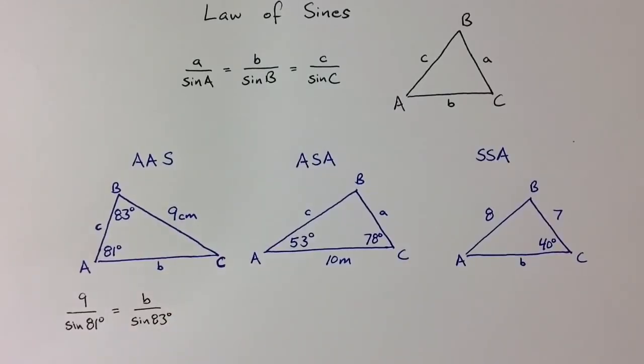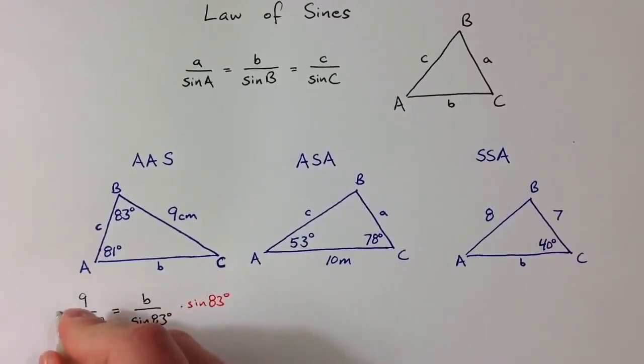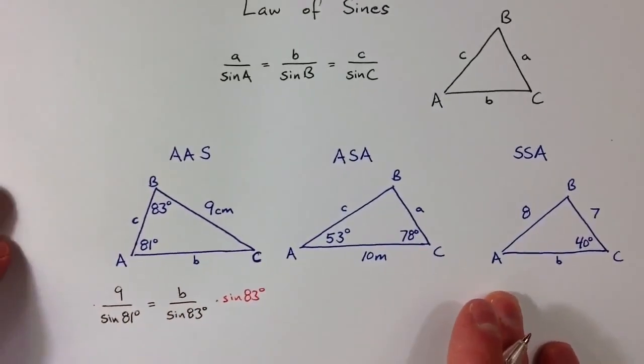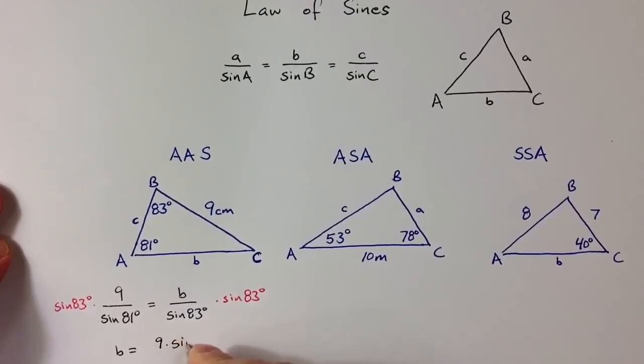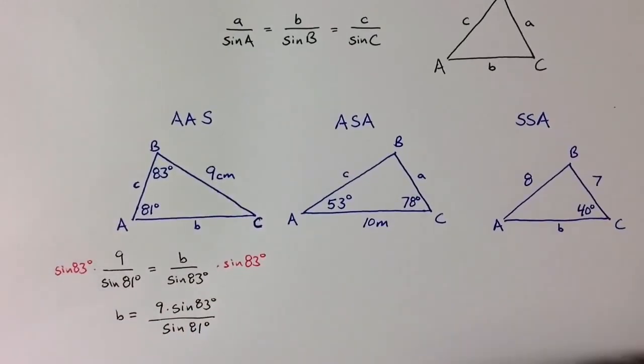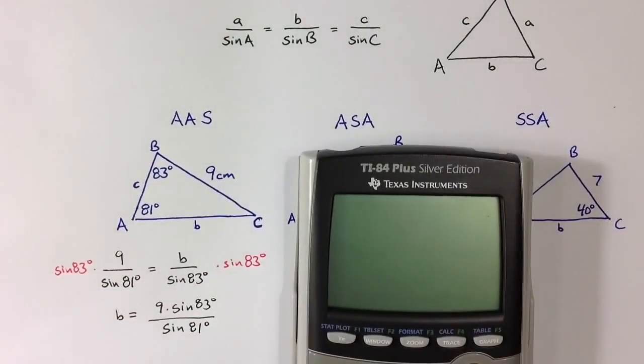And so we can solve this problem if I multiply both sides by the sine of 83 degrees. That's just some number, so I can multiply both sides by that number. And so from that I know that side length b has to equal 9 times sine of 83 degrees divided by sine of 81 degrees.